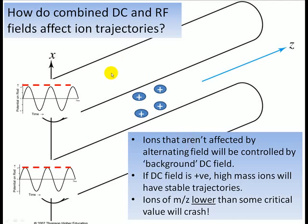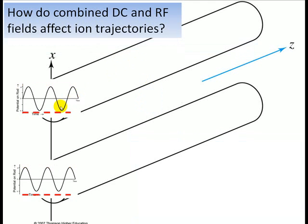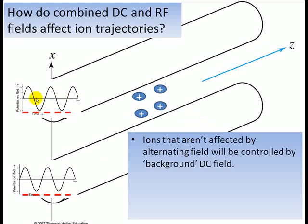So anyway, now let's look at the situation where the rods have a negative DC voltage. When the rods have this negative DC voltage, that tends to destabilize the trajectories. The ions would crash if they were not affected sufficiently by the alternating voltage. So in this situation, the alternating voltage has the chance to save them from crashing.